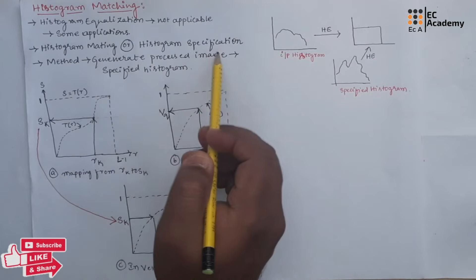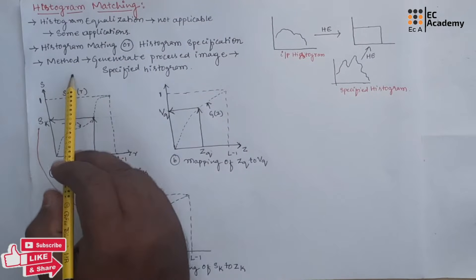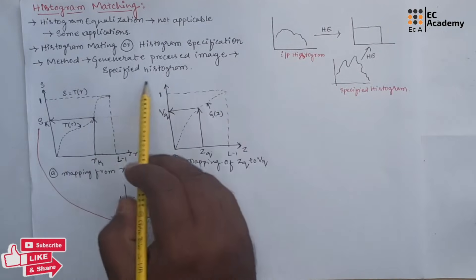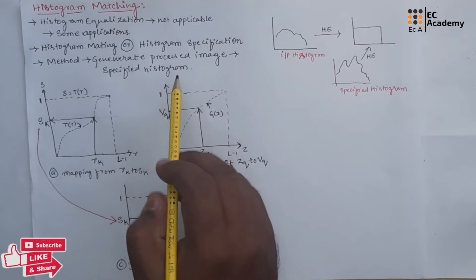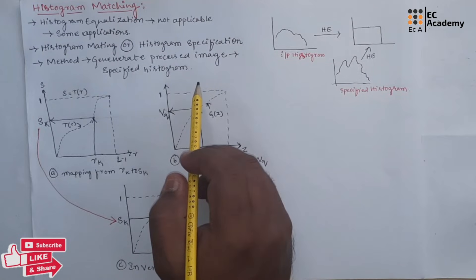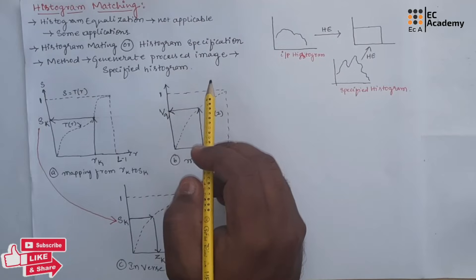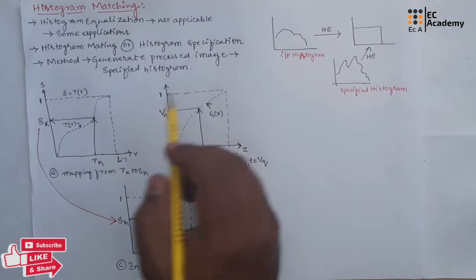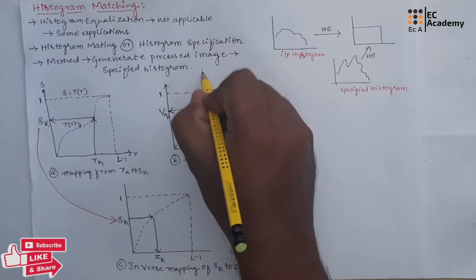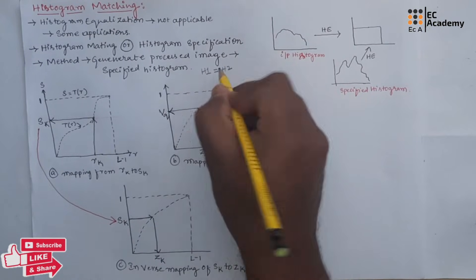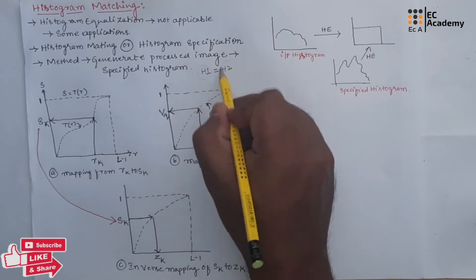Histogram Matching or Histogram Specification is a method used to generate a processed image that has a specified histogram. The goal of Histogram Matching is to take an input image and generate an output image based upon the shape of a specific or reference histogram. Generally, if we have Histogram 1 and Histogram 2, we need to match Histogram 1 with Histogram 2.